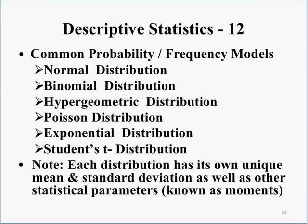It's worth briefly noting some common probability or frequency models. The normal distribution is your traditional bell-shaped curve. It is worth noting that each distribution has its own unique average or mean as well as a standard deviation — a measure of variation around the mean — as well as other statistical parameters known as moments, such as the third and fourth moment.